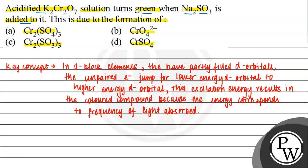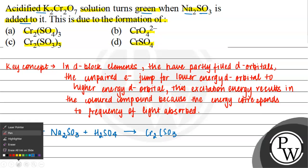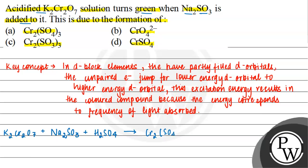Let us talk about the reaction. K2Cr2O7 plus 3Na2SO3 plus 4H2SO4, as it is acidified with sulfuric acid, gives Cr2(SO4)3 plus K2SO4 plus 3Na2SO4 plus 4H2O.